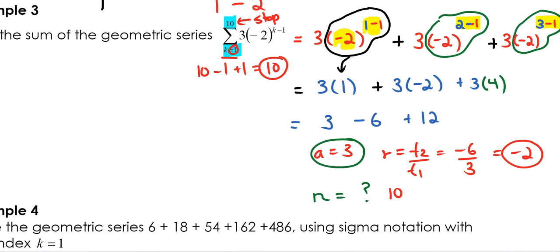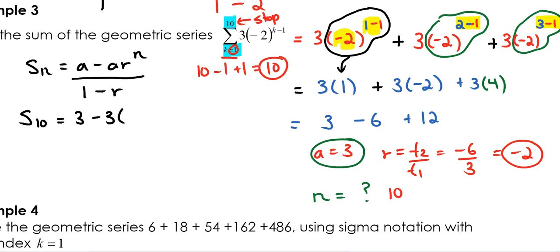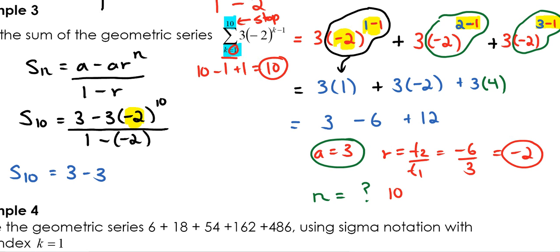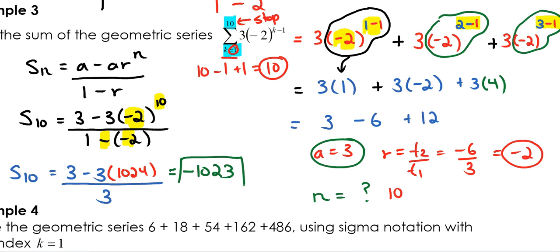Plugging into formula 1: Sn equals A minus A times R to the power of N, divided by 1 minus R. So S10 equals 3 minus 3 times negative 2 to the power of 10, all over 1 minus negative 2. Negative 2 to the power of 10 is 1024. The denominator becomes 3. This gives a total sum of negative 1,023.